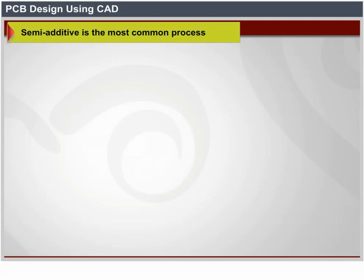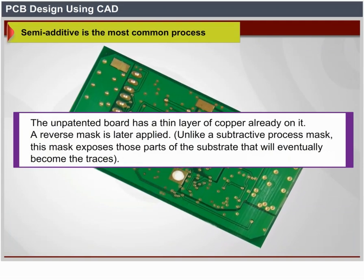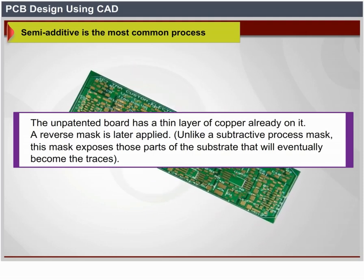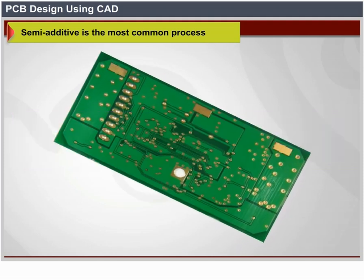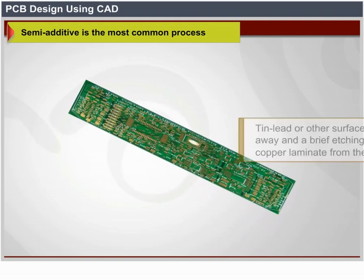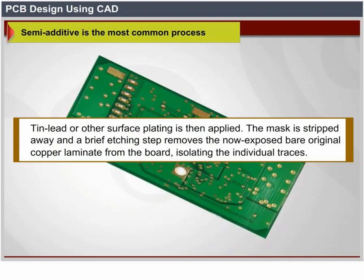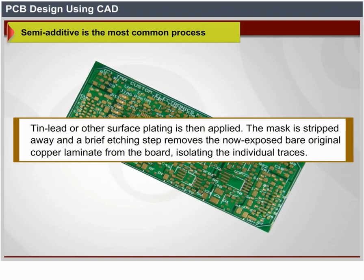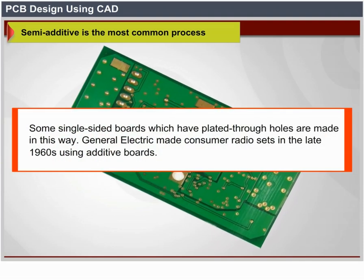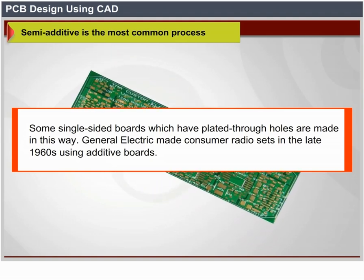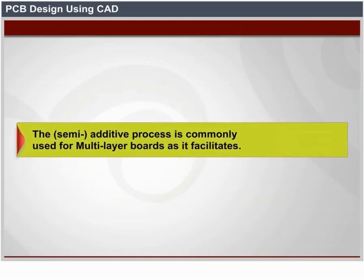Semi-additive is the most common process. The unpatterned board has a thin layer of copper already on it. A reverse mask is applied which exposes the parts of the substrate that will eventually become the traces. Additional copper is then plated onto the board in the unmasked areas to any desired weight. Tin, lead, or other surface platings are then applied. The mask is stripped away, and a brief etching step removes the now-exposed bare original copper laminate, isolating the individual traces. General Electric made consumer radio sets in the late 1960s using additive boards. The semi-additive process is commonly used for multi-layer boards.